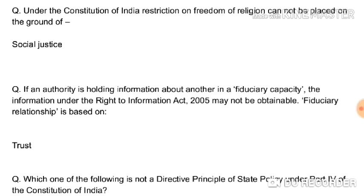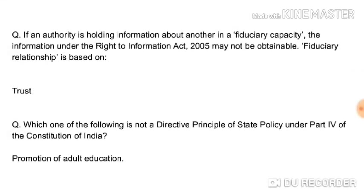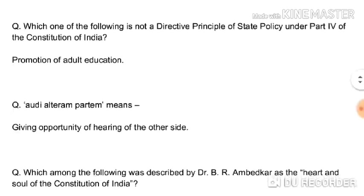If an authority is holding information about another in a fiduciary capacity, the information under the Right to Information Act 2005 may not be obtainable. A fiduciary relationship is a relationship of trust. Examples include lawyer and client, doctor and patient, and teacher and student. In all three cases, one person should not disclose the confidential information of the other in public.